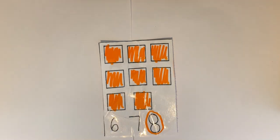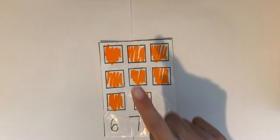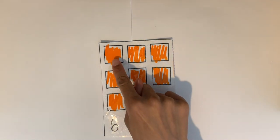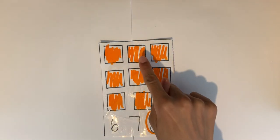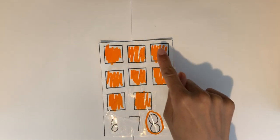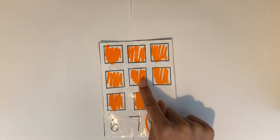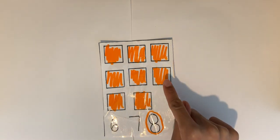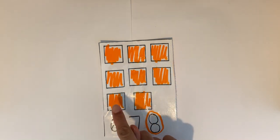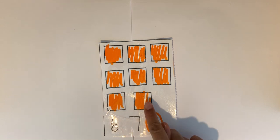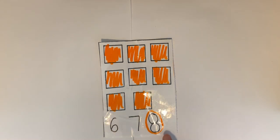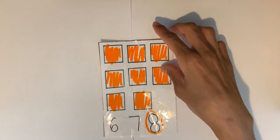Let's count one more time. One, two, three, four, five, six, seven, eight. Eight squares.